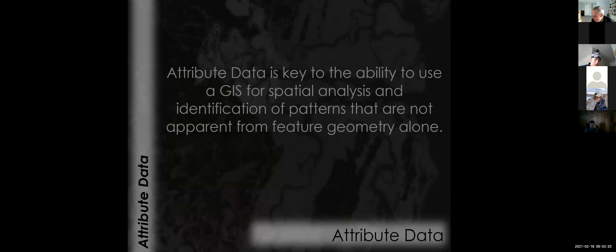For example, if you have attribute data about trees on a site, you can determine the relative distribution of different species. Or if you have counts of an invasive species of snakes in various locations, you can determine where that infestation started and where it's spreading. It's this numeric and other types of attribute data that give ArcGIS the ability to do analysis on the graphic portion of the map.